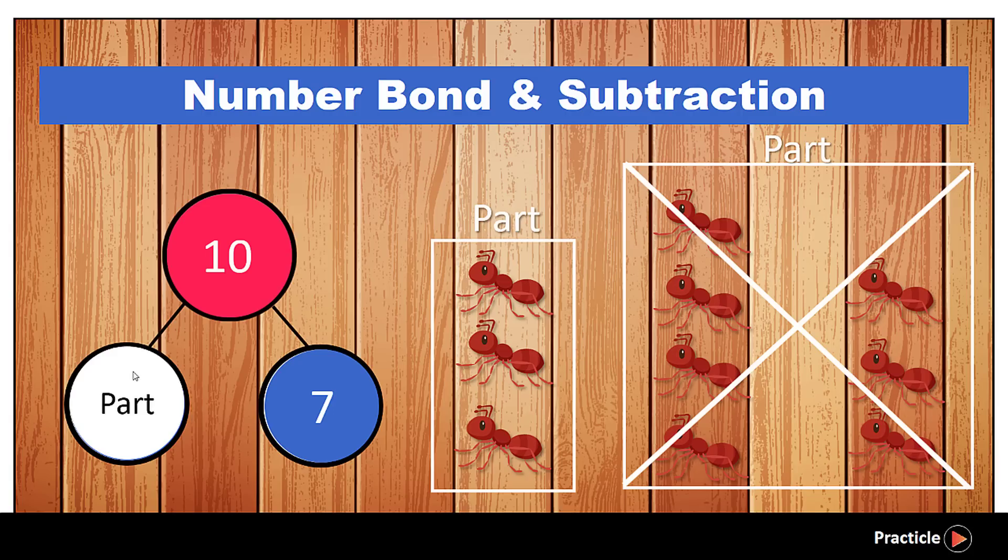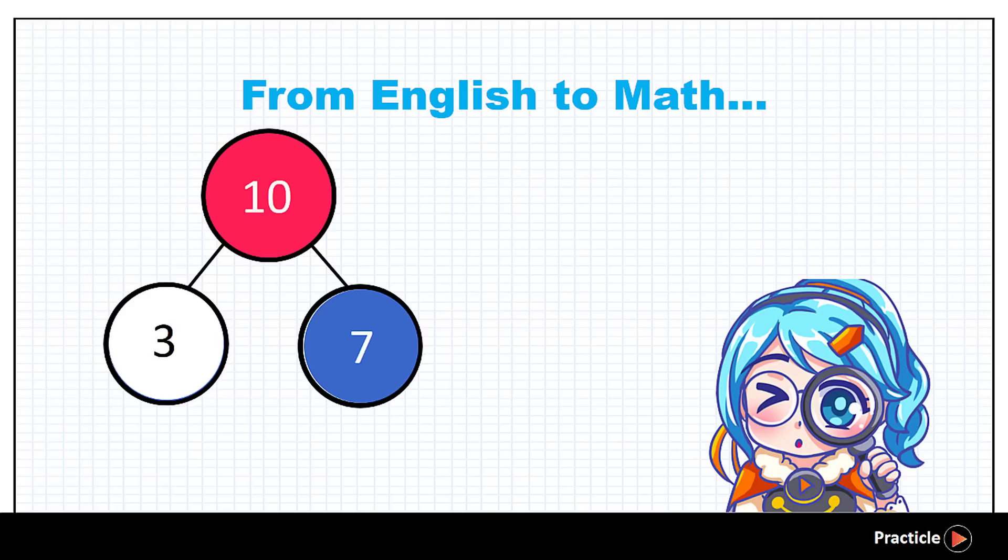So how many ants do we get when we subtract 7 from 10? We have 10 ants here, and then we say bye to 1, 2, 3, 4, 5, 6, 7, bye 7 ants. So it looks like we have 1, 2, 3, 3 ants left.